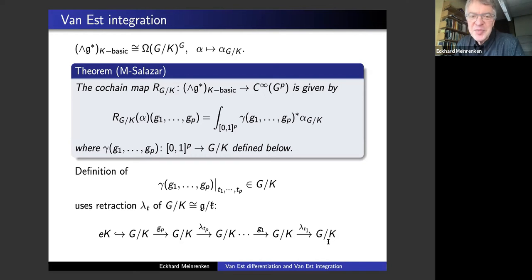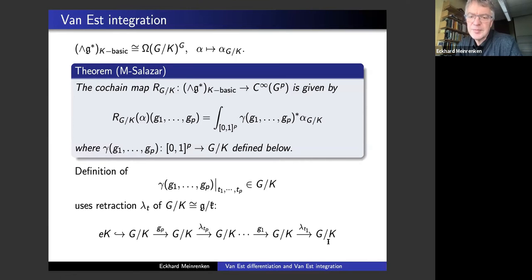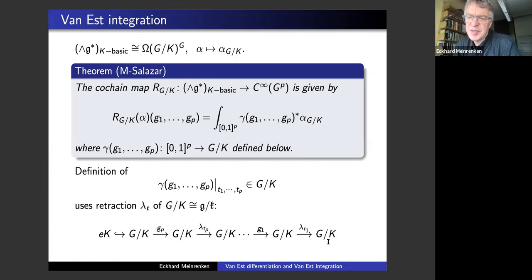This integration map is not new — it appears already in the work of Maria and her coauthors, at least in the case K is trivial. In the general case with compact K, it may be new. It is slightly different from integration maps due to Tischler, Guichardet, and Dupont, who worked with a simplex instead of a P-cube. I'm not sure if the formula with a simplex would actually give a right inverse on the level of cochains.